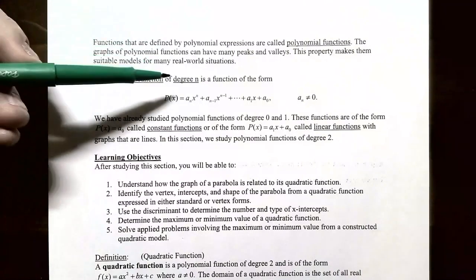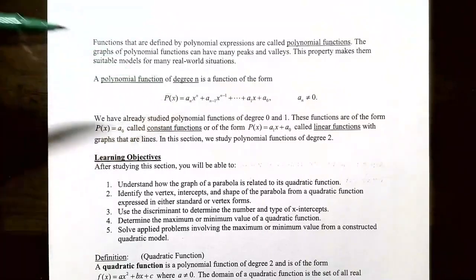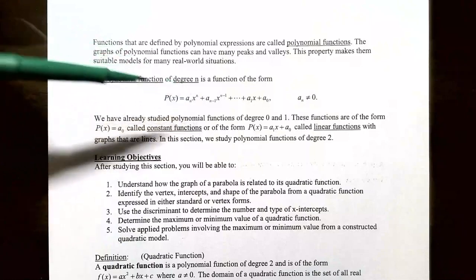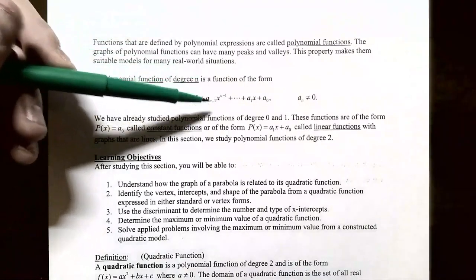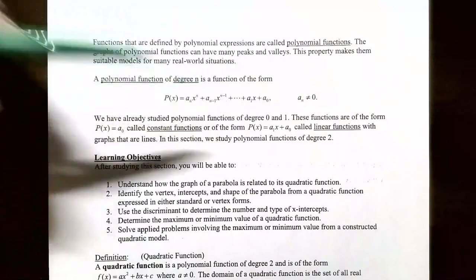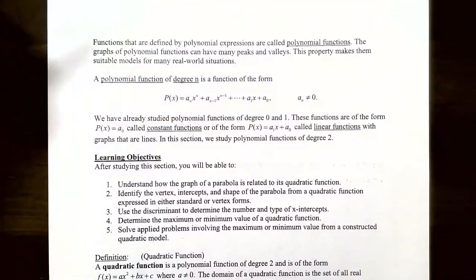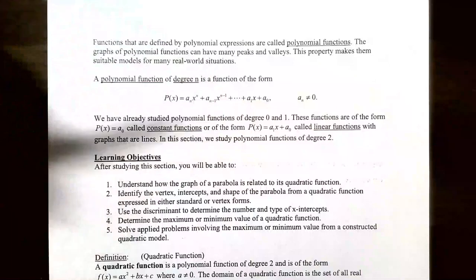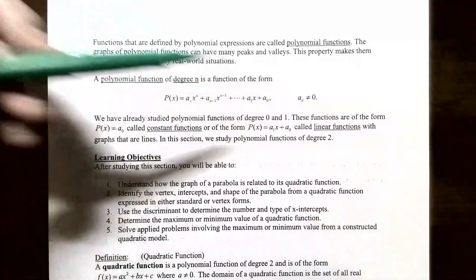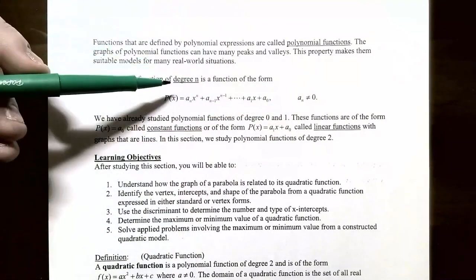A polynomial function of degree n has n as the highest exponent on the variable x. It takes the form a_n·xⁿ + a_{n-1}·x^{n-1} + … where a_n is the coefficient of xⁿ. The next term has coefficient a_{n-1} times x to the n−1 power, and so on, down to a_1·x plus a_0, where a_0 is a constant. The only restriction is that a_n cannot be 0, otherwise the degree would not be n.